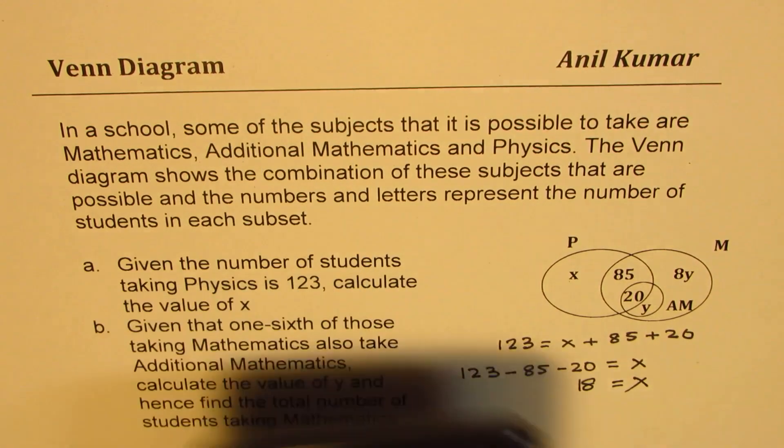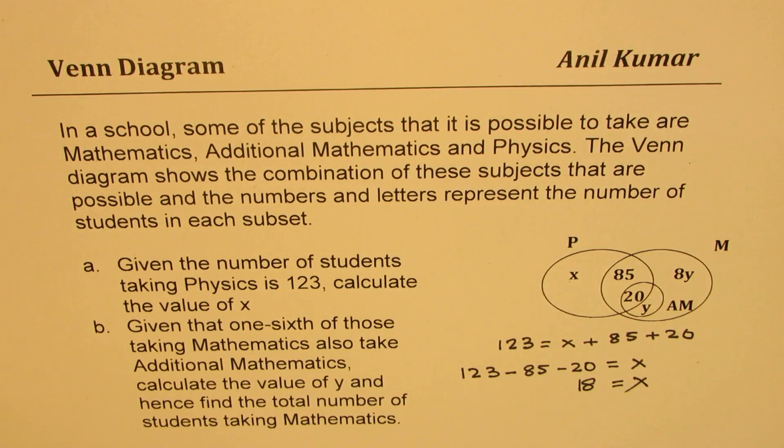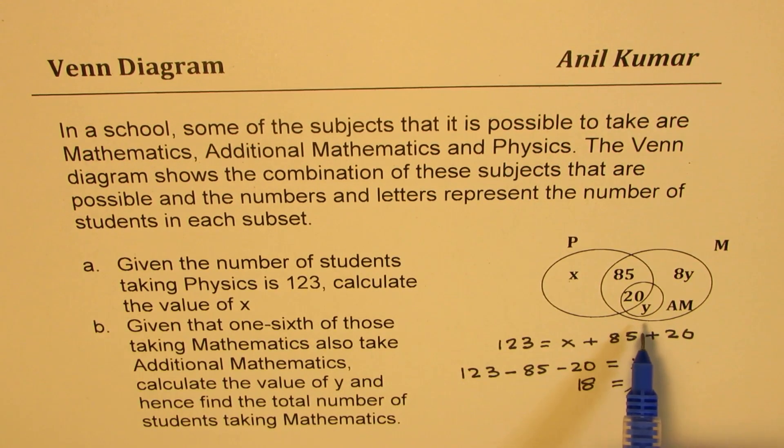So X is 18 for us. Now let's look into part B. Given that one sixth of those taking mathematics also take additional mathematics. That means that ratio is one sixth, right? Now in this particular diagram, how many students have taken mathematics but not additional mathematics?